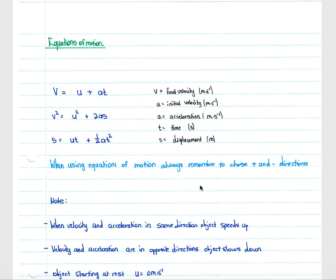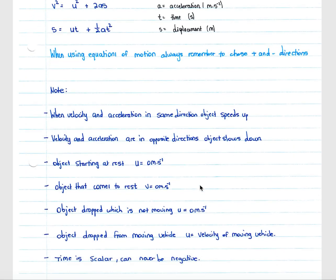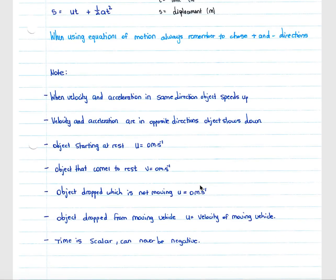When using the equations of motion, you must remember to choose positive and negative directions. For instance, if a car is moving north, define north as either positive or negative and work consistently with that convention. When velocity and acceleration are in the same direction, the object will speed up. If a car moves north and accelerates northward, it speeds up; if the brakes are applied, the force acts southward and the car slows down.